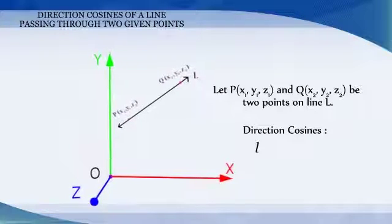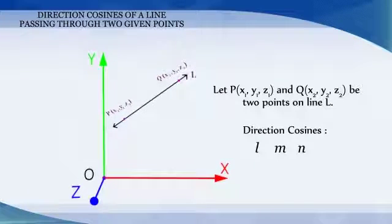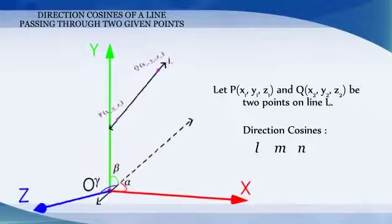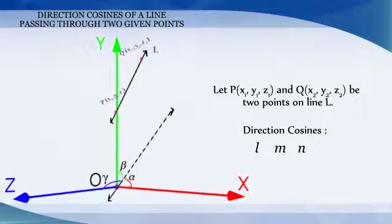Let l, m, n be the direction cosines of the line PQ and let it make angles alpha, beta, and gamma with x, y, and z axis respectively.